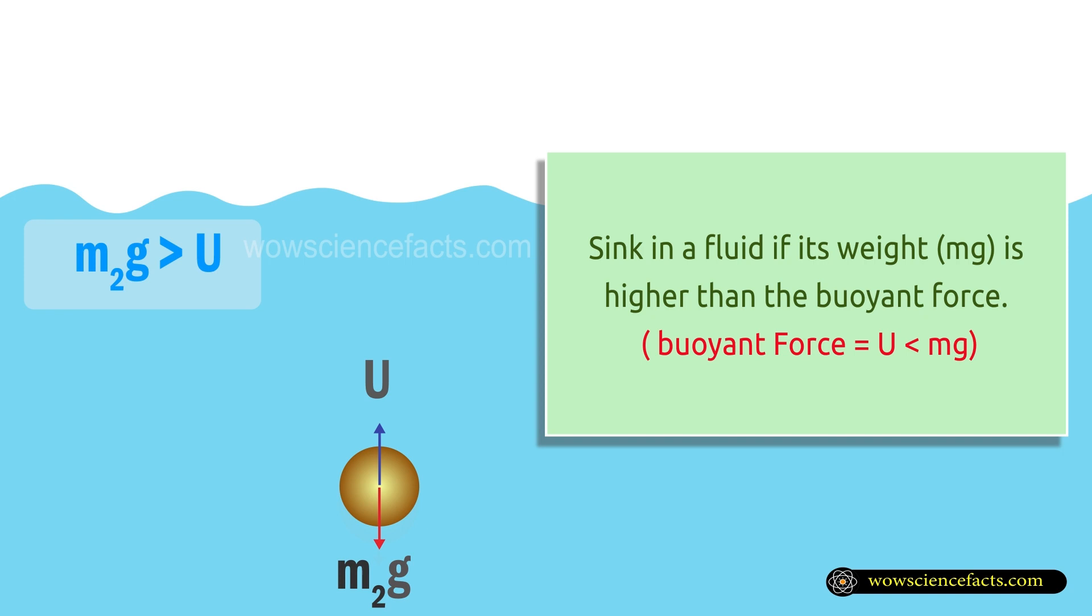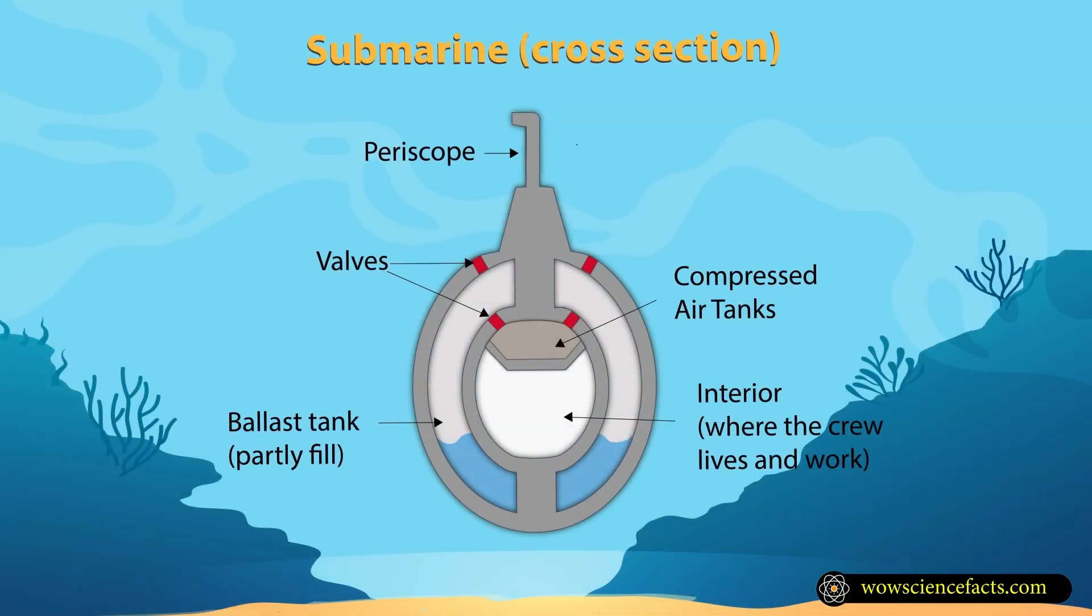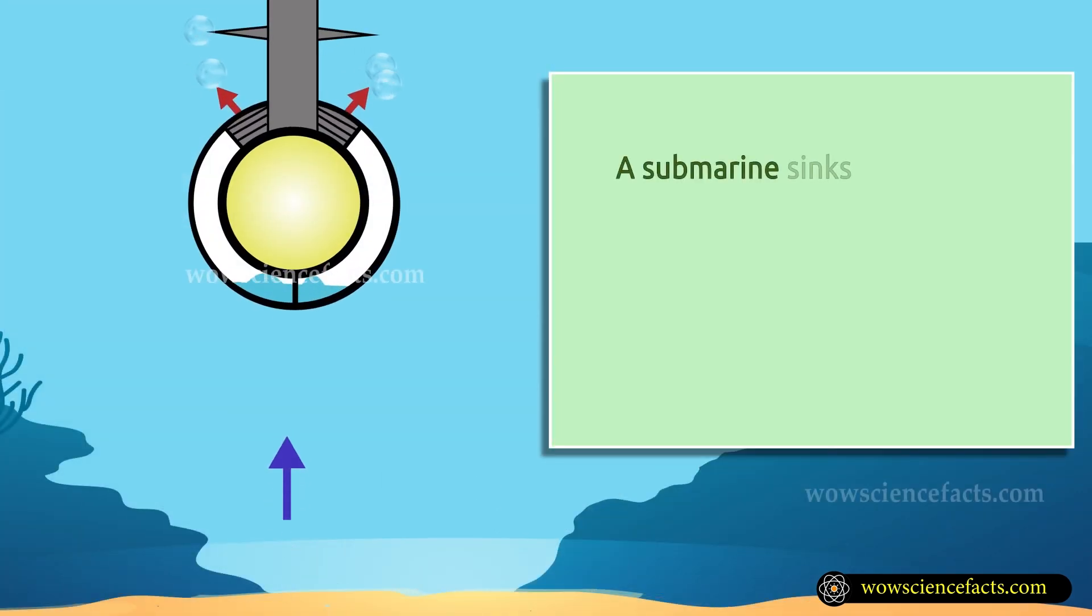Submarines control their buoyancy using a clever system of ballast tanks. These tanks are located throughout the submarine and can be filled with water or emptied of it. The process of submarine diving or surfacing is a delicate balance.